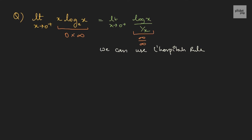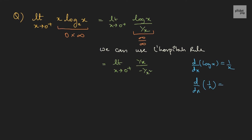That is, we differentiate the numerator as well as the denominator. So, limit x tends to 0 plus: the derivative of log x is 1/x, and the derivative of 1/x in the denominator is negative 1/x². For reference: d/dx of log x is 1/x, and d/dx of 1/x is negative 1/x². Let us simplify this. This gives limit x tends to 0 plus of negative x, and when we substitute 0, this becomes 0. That is the value of the expression.